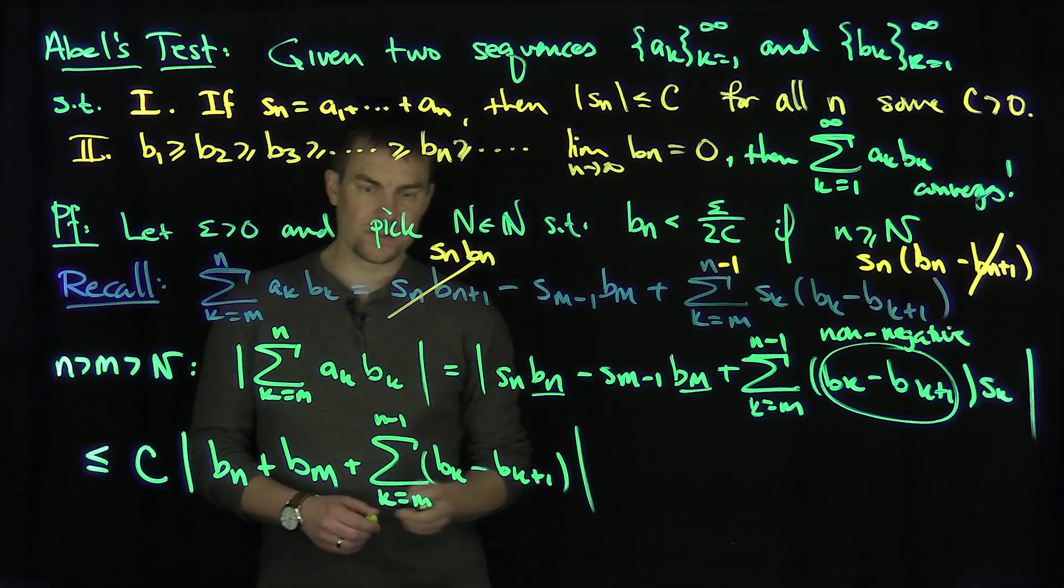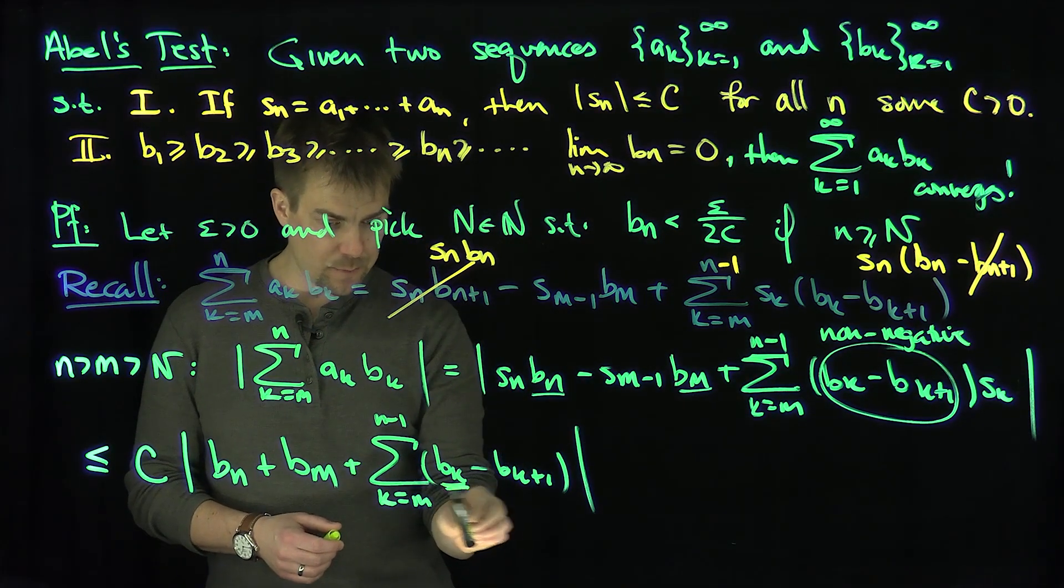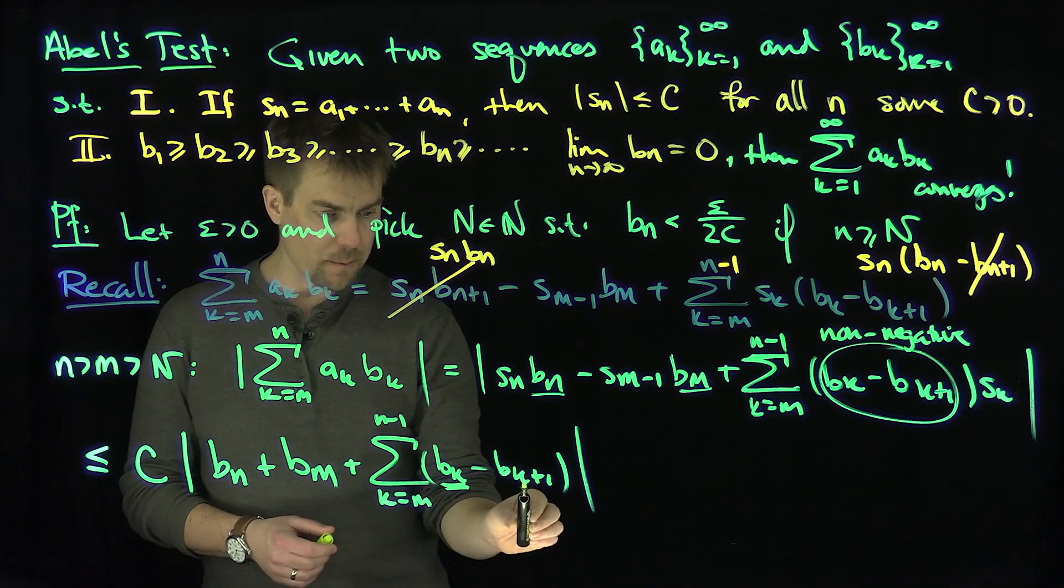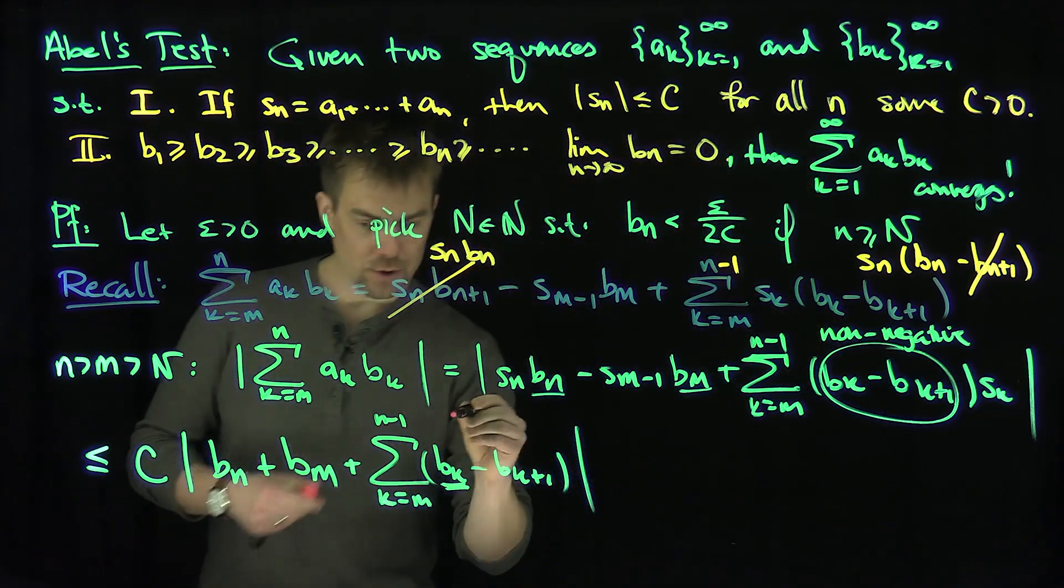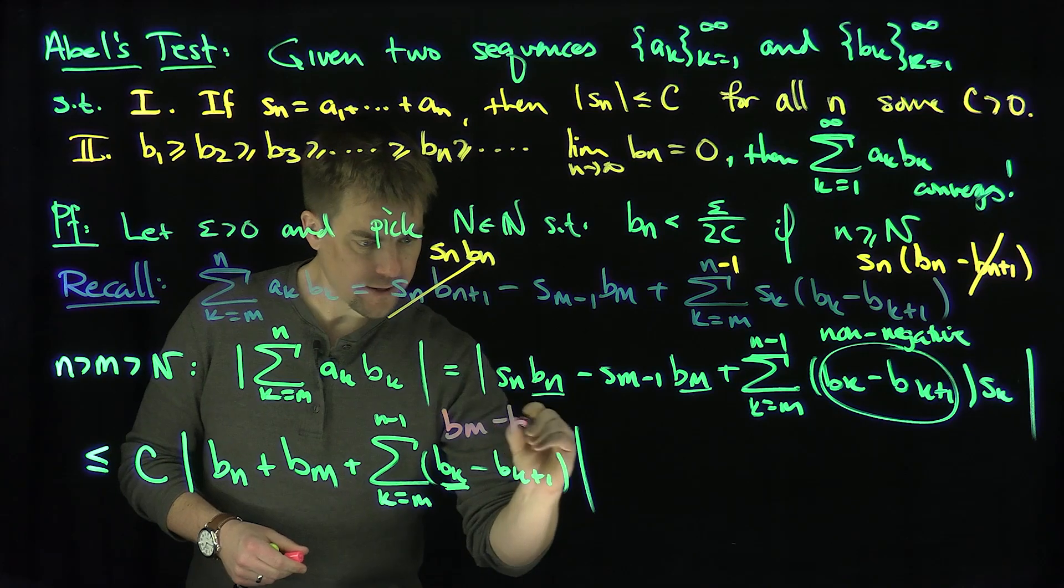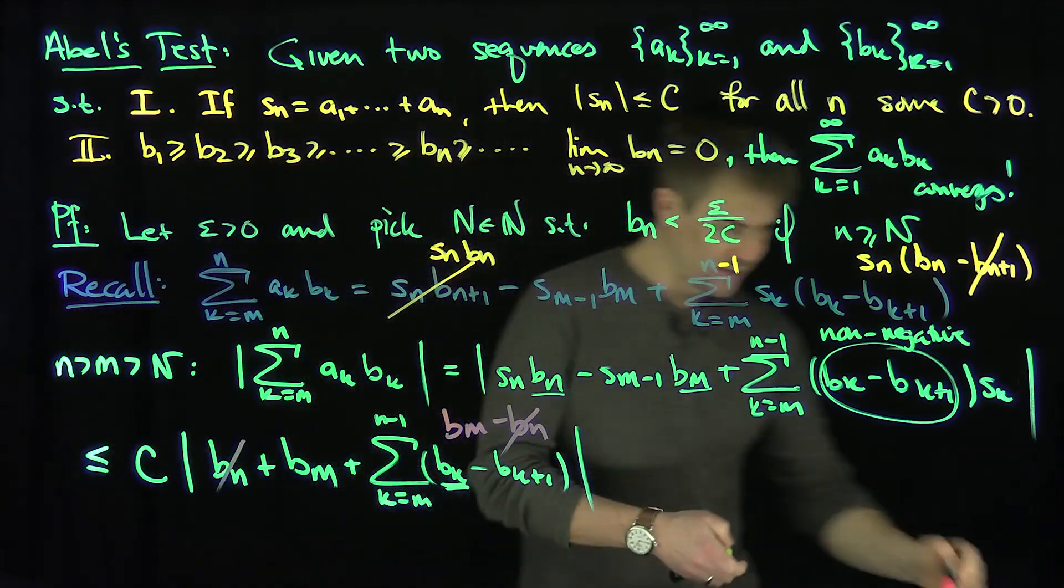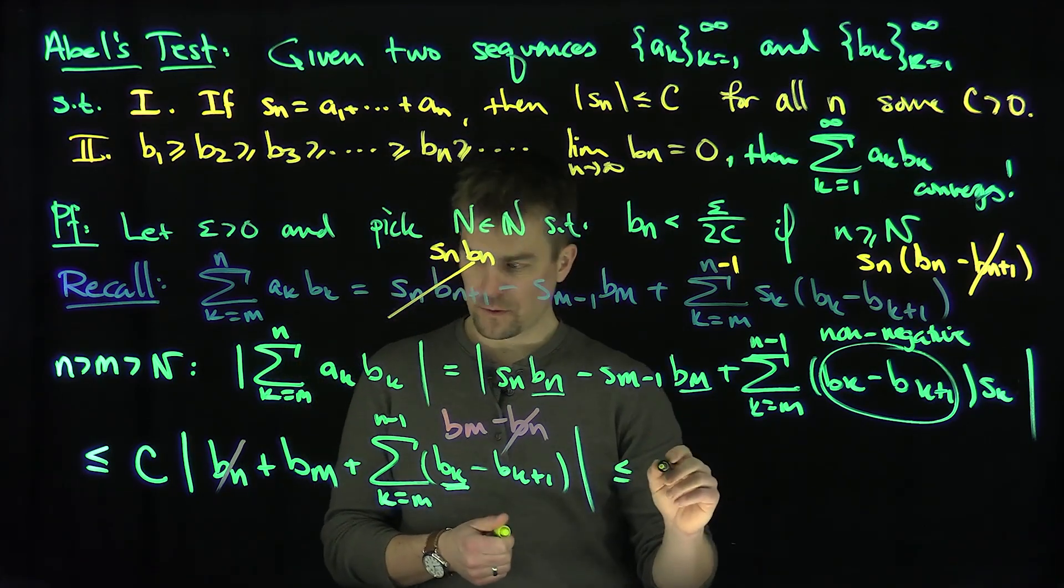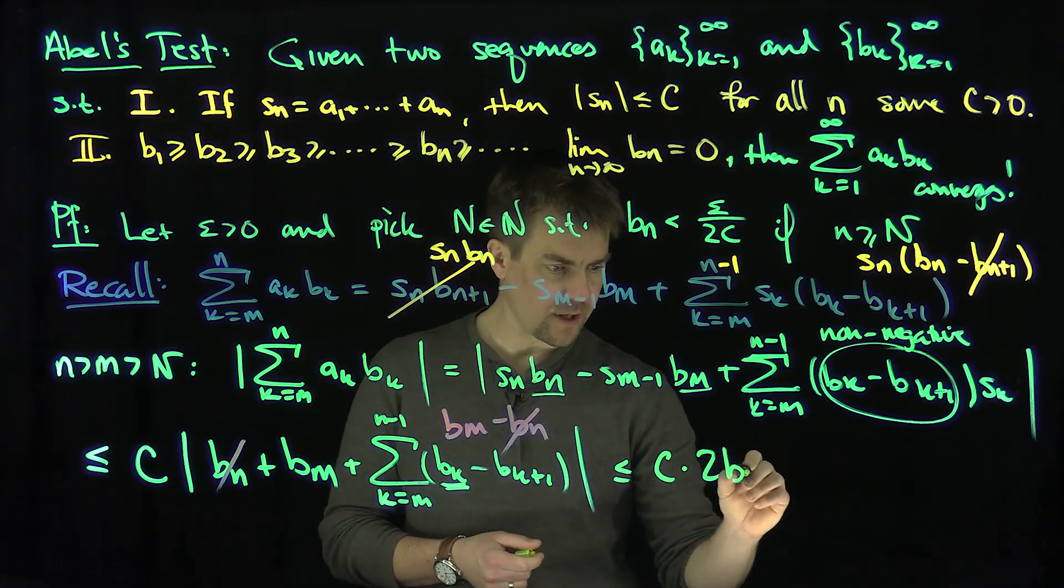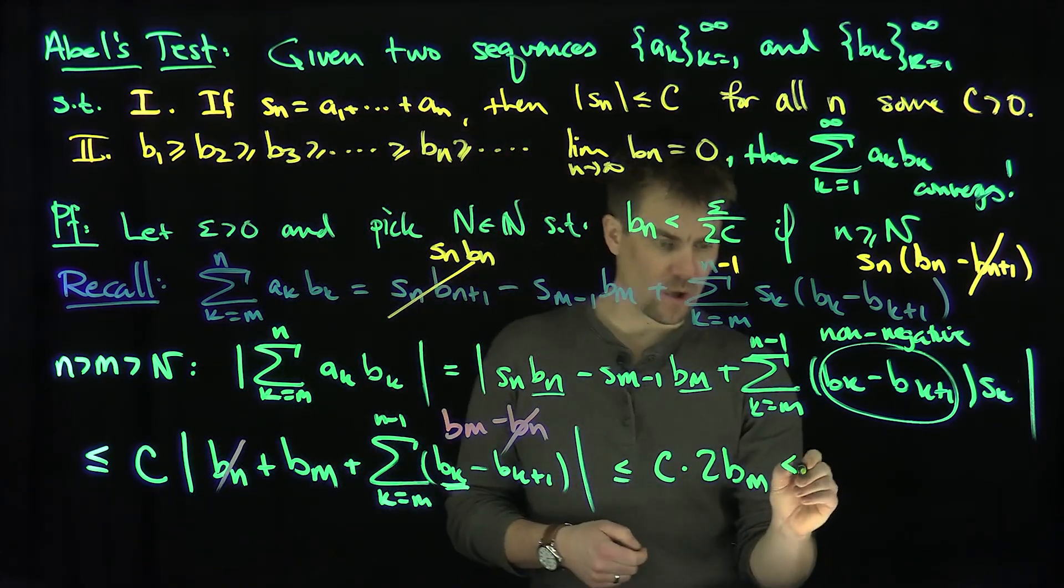This is a telescopic sum. The very last term is b_m, and the very first term is b_m, and the very last term is going to be a b_n. So this telescopes to just b_m minus b_n.